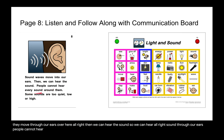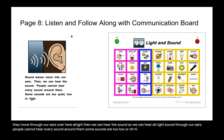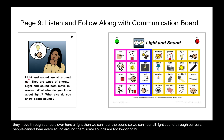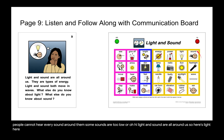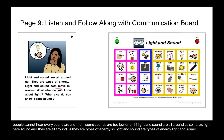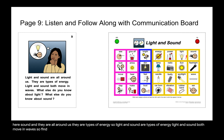People cannot hear every sound around them. Some sounds are too quiet, low, or high. Light and sound are all around us. They are types of energy. Light and sound both move in waves — find light, find sound. How do they move? They move in waves.